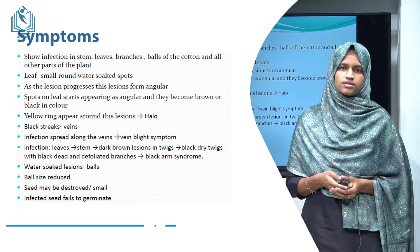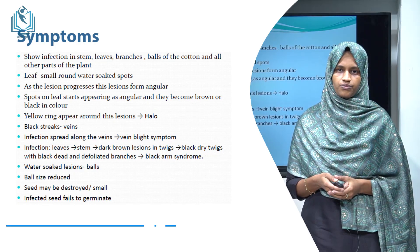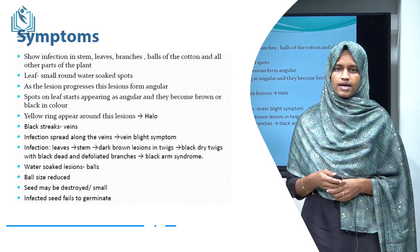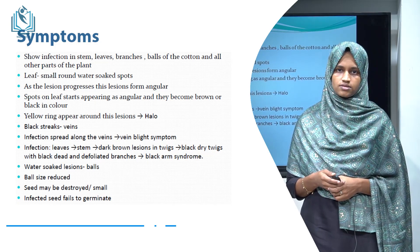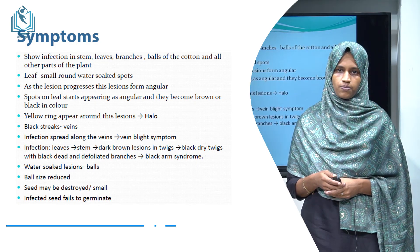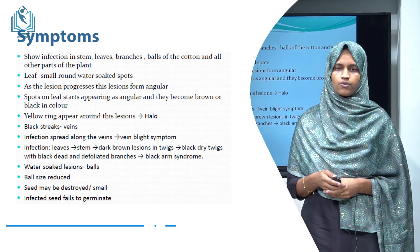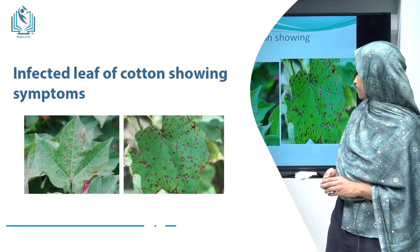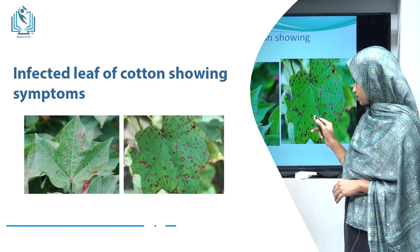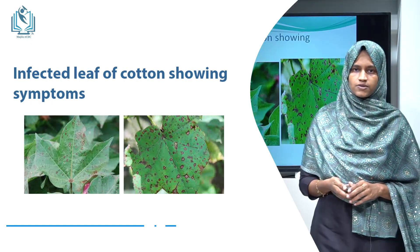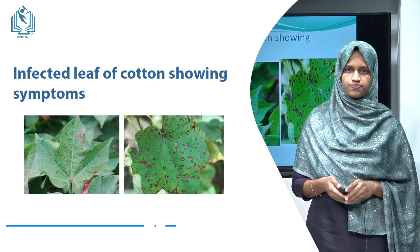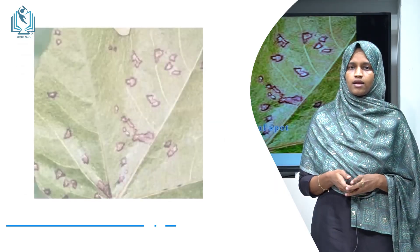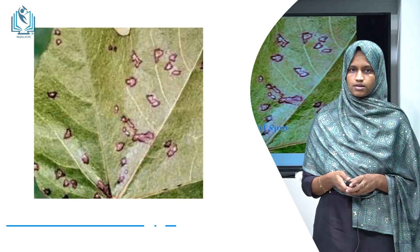As the disease progresses, the lesions become angular in shape — that is why it is called angular leaf spot of cotton. The angular leaf spots are water-soaked lesions of different sizes, as shown in the figures. An enlarged view of the angular leaf spot shows that an area forming a ring is present around the spot.